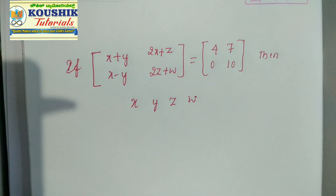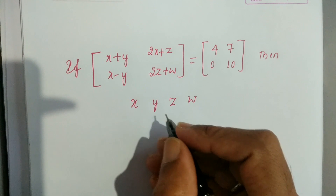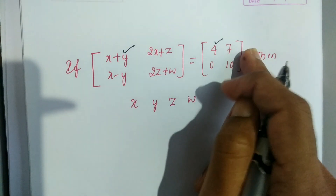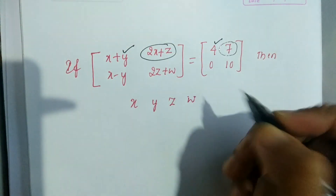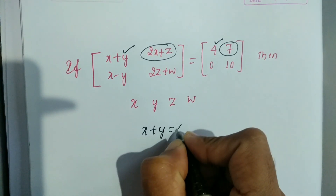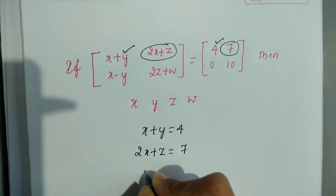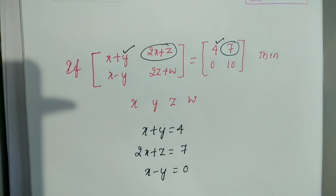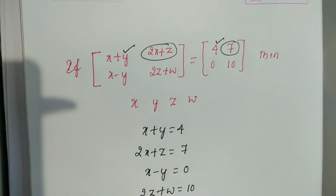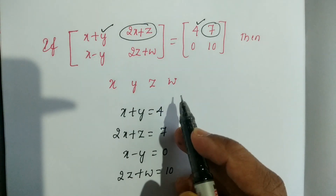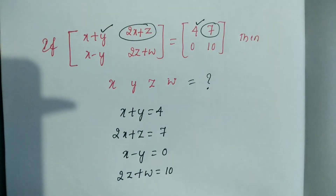Let's solve this first. Since the two matrices are equal, equating corresponding entries: x + y = 4, next 2x + z = 7, and x − y = 0, and 2z + w = 10. So these are our four equations, and we want to find the values of x, y, z, and w.